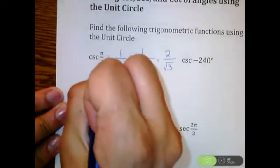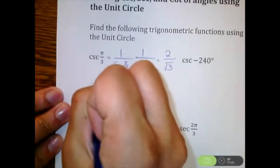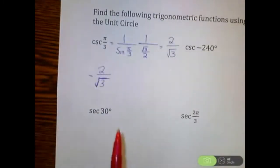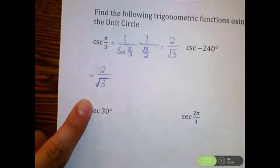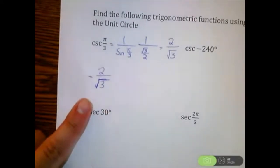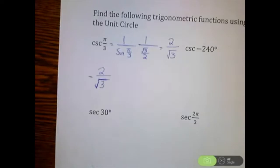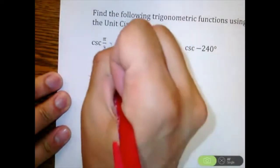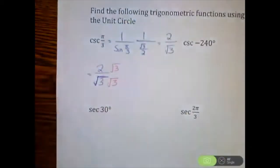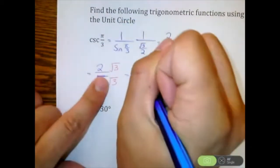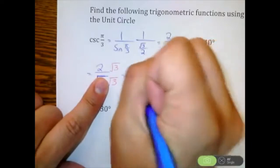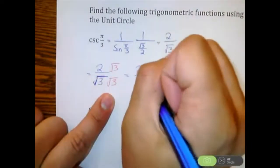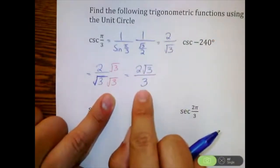Two over the square root of three isn't fully simplified because we cannot have a square root in the denominator, so we need to rationalize the denominator. We multiply top and bottom by √3. On the numerator we get 2√3, and on the denominator √3 times √3 is just three. So cosecant of π/3 equals 2√3/3.